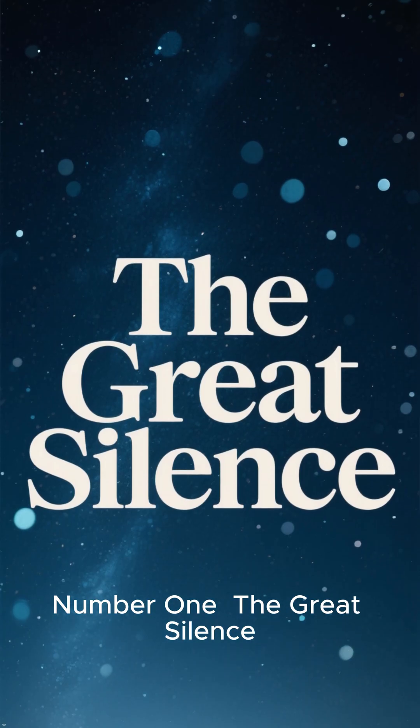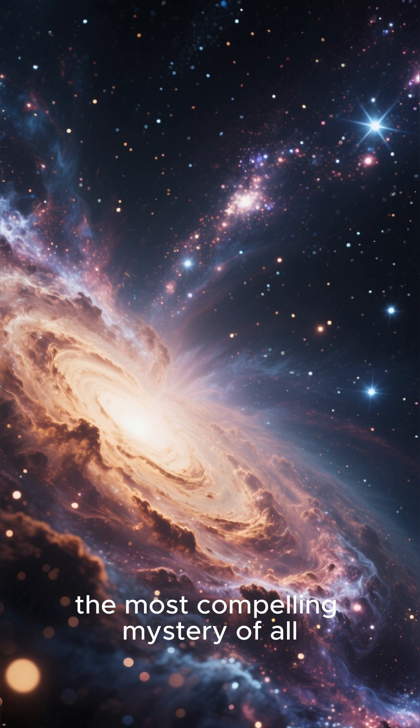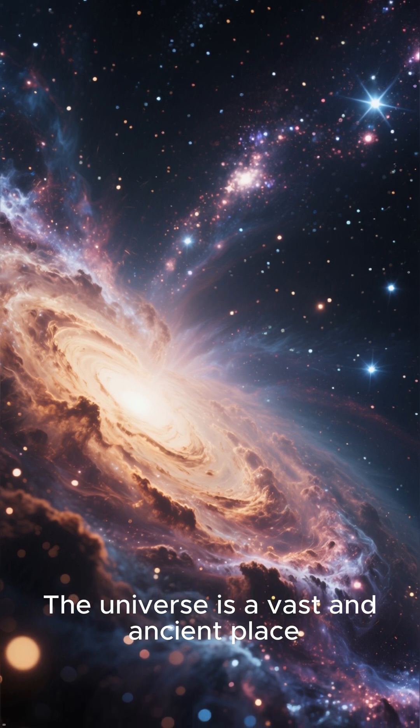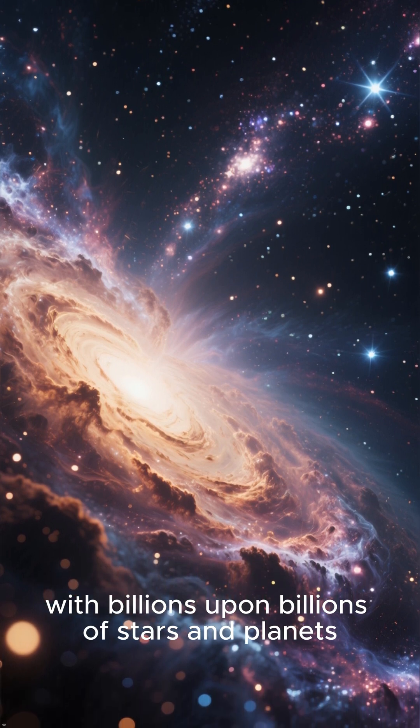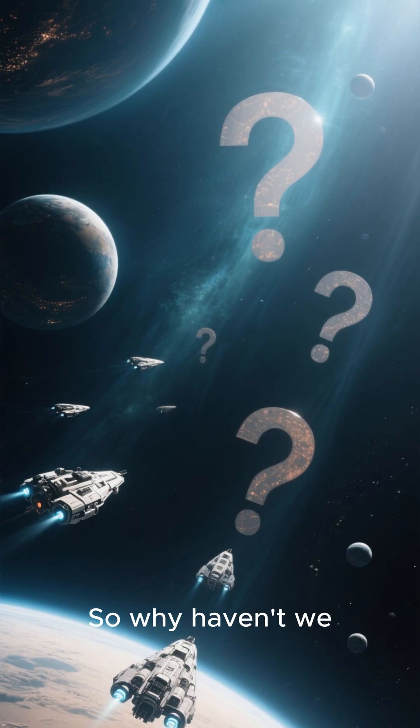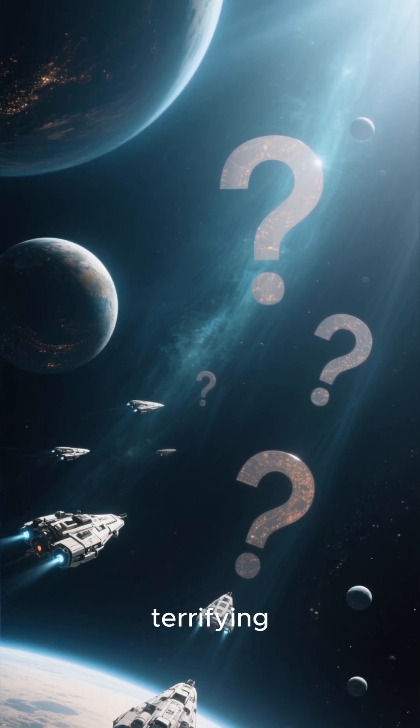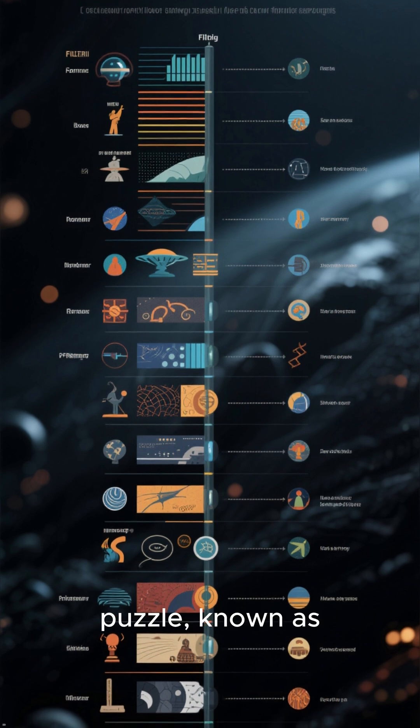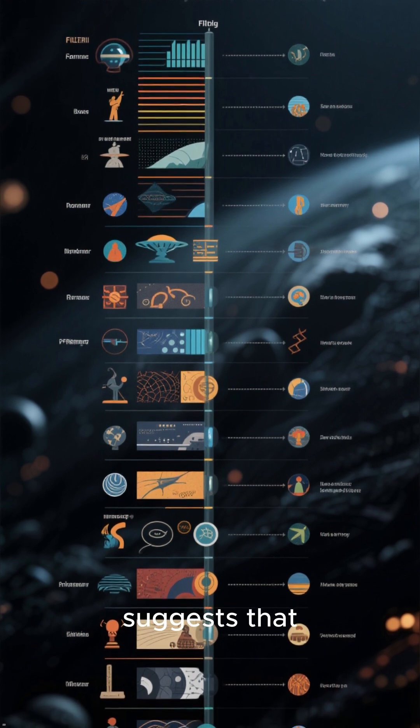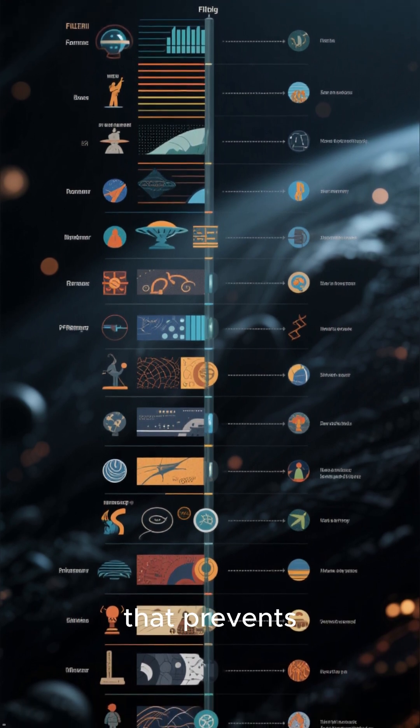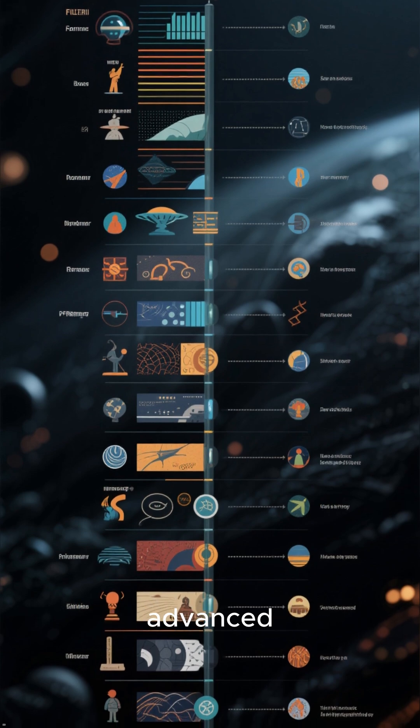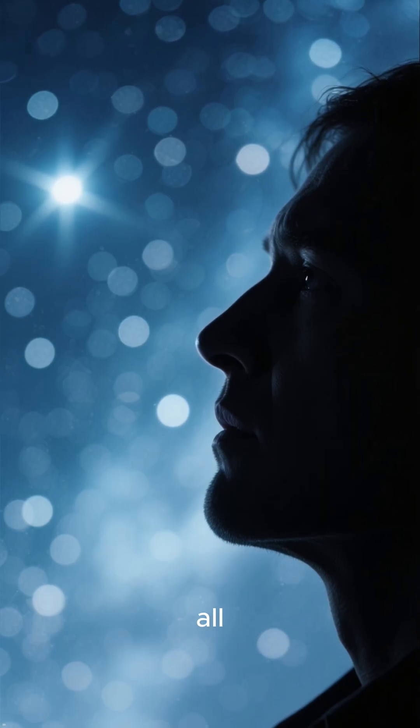Number 1: The Great Silence. Finally, the most compelling mystery of all. The universe is a vast and ancient place, with billions upon billions of stars and planets. So why haven't we found any signs of intelligent life? The silence is deafening and terrifying. This philosophical puzzle, known as the Fermi Paradox, suggests that there may be a great filter that prevents civilizations from becoming too advanced. This unsettling truth might be the scariest of all.